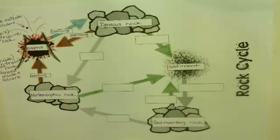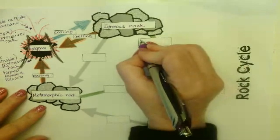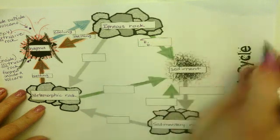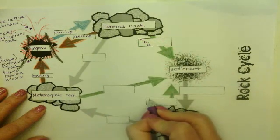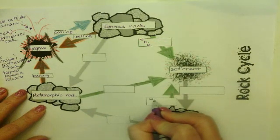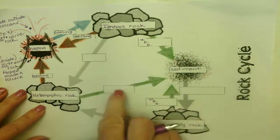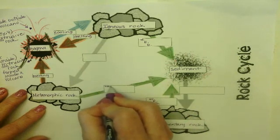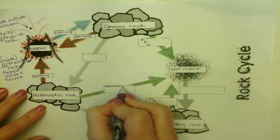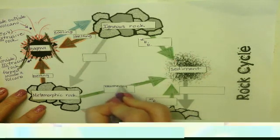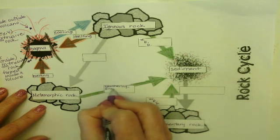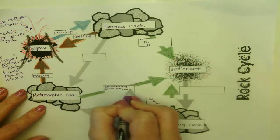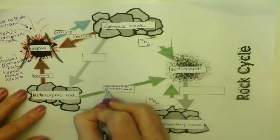We're going to write the words weathering, erosion, and deposition on those green arrows — I'll abbreviate it W-E-D on one and spell out weathering, erosion, and deposition on the other. Deposition means you're depositing the material somewhere else.